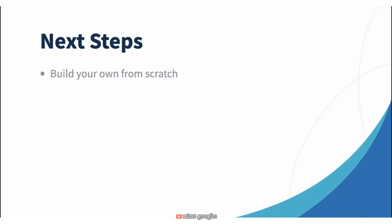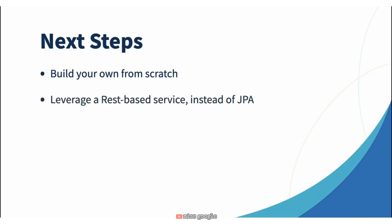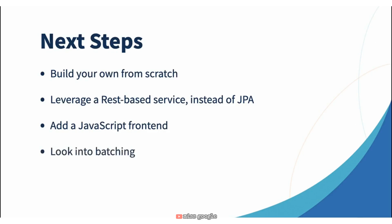Some next steps I would encourage: first, build your own from scratch — find a data set you're excited about, whether Star Wars characters or Harry Potter, and build a GraphQL instance using what we've done in this course. Try it with a REST-based service instead of JPA — using REST template is super simple and more natural for people building applications that call REST services. Add a JavaScript front end — you already have the web package, you can expose a static HTML page with JavaScript and leverage GraphQL, which is what you'd do in a full stack Java application. Also take a look at the batching APIs that come with this — batching is a way to really save network bandwidth when you always know that loading X will require Y.